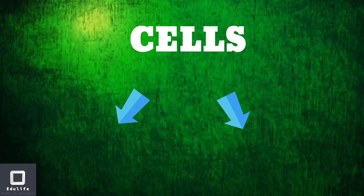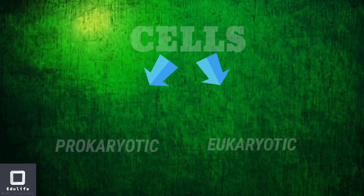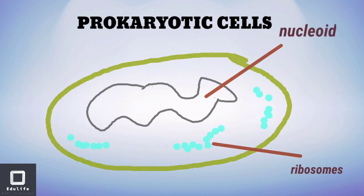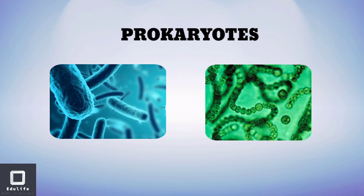Cells are of two types: prokaryotic cells and eukaryotic cells. Prokaryotic cells have no nuclear membrane. The chromatin material in this type of cell is not membrane-bound.